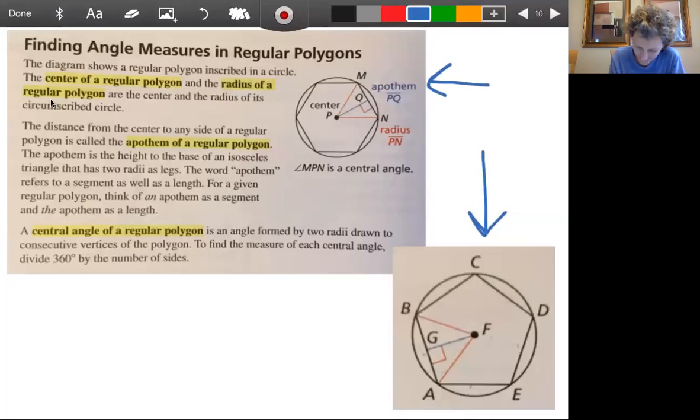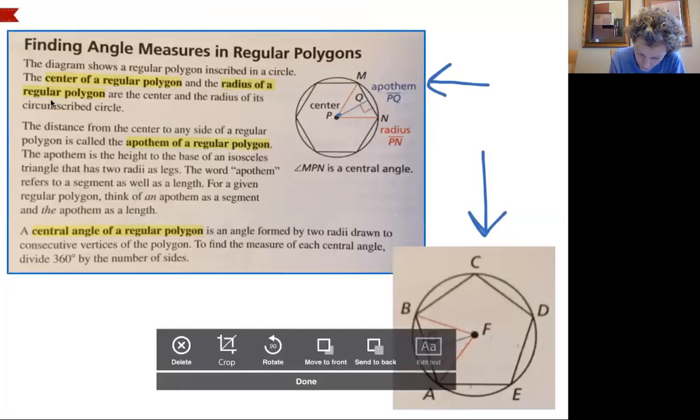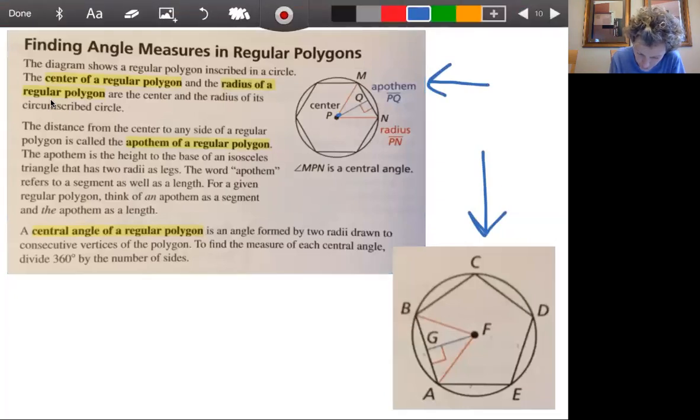I was about to point to my screen. This is the apothem right here from the center of this polygon to a side. It says it right here, the distance from the center to any side of a regular polygon is called the apothem. And that'll be part of our area formula. So we need to identify that. And eventually you'll be able to find the length of it.